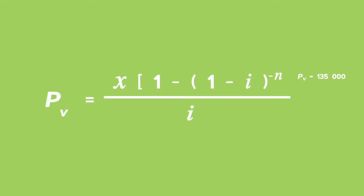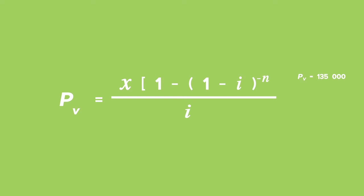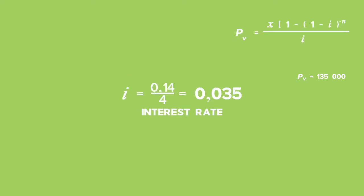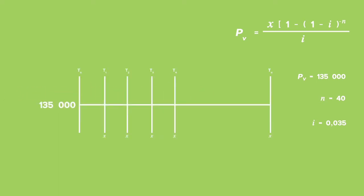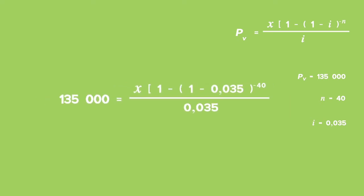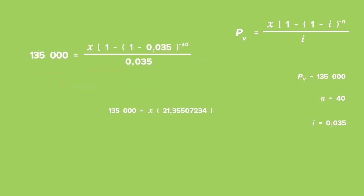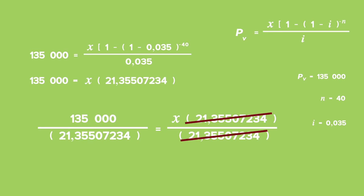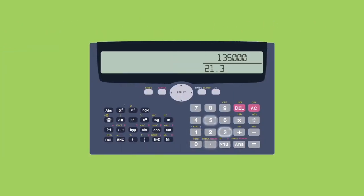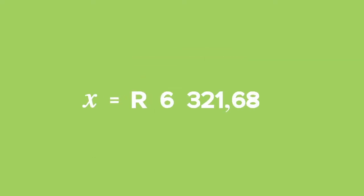We need to use the present value formula for this question as we are dealing with a loan. The interest rate will be 0.14 divided by 4, as the compounding period is quarterly, giving 0.035. Over 10 years there will be 40 quarterly payments made. Substitute values for the present value, i and n, and solve for x by dividing both sides by the fraction on the right-hand side. The quarterly payment is R6,321.68.